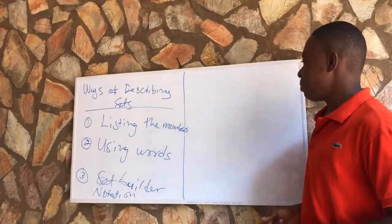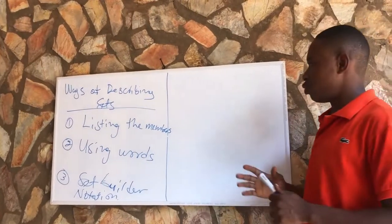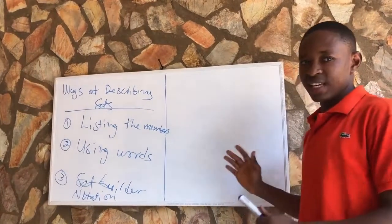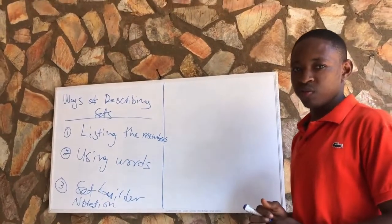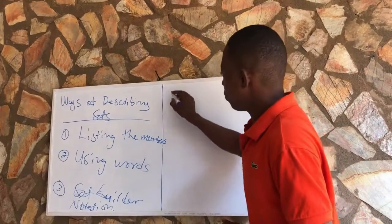In listing the members, what we mean is that you are going to list the actual members of the set. For example,